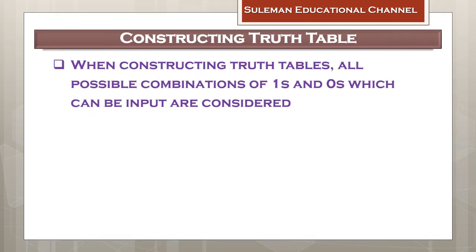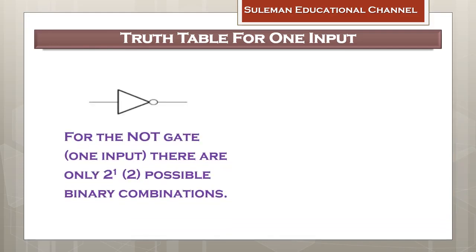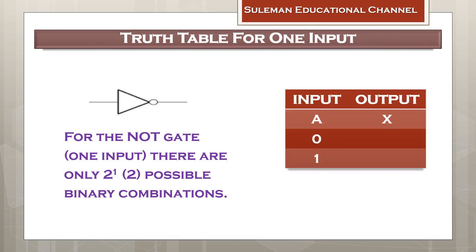Now we will discuss how a truth table is constructed. When constructing a truth table, keep in mind to consider all possible combinations of ones and zeros which can be provided as input. The NOT gate is the only logic gate that has one input, therefore 2 to the power of 1 equals two possible binary combinations. As you can see in the table, A is the input whereas X is the output. The first combination is A equal to zero, and the second combination is A equal to one.